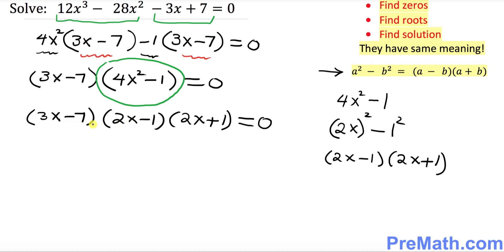Now we see that we have three factored parts. And they are equal to 0. You can split them up easily. So I can write 3x minus 7 equal to 0. The next is 2x minus 1 equal to 0. And finally, 2x plus 1 equal to 0.